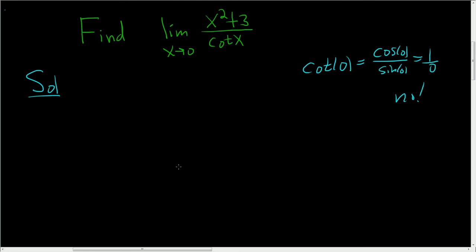So what we'll do is rewrite cotangent in terms of sine and cosine, and then see if we can just plug in the 0. So this is x squared plus 3 over cosine x over sine x.